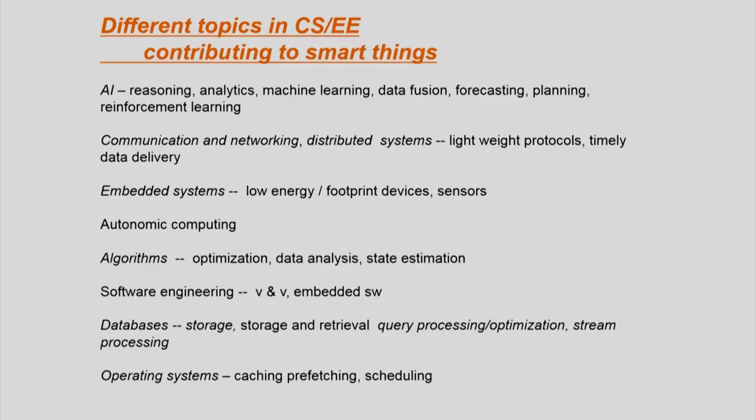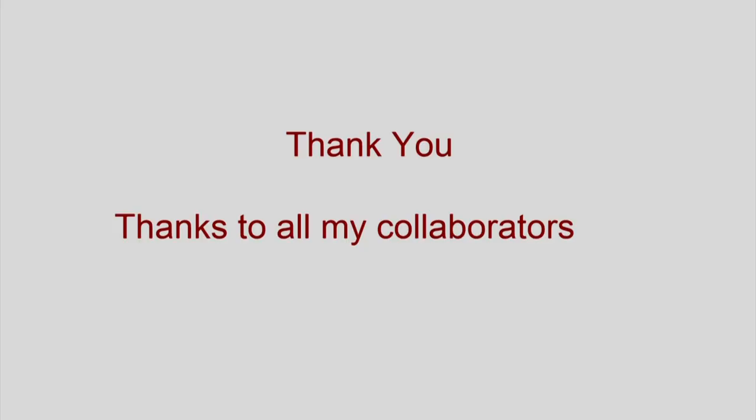Finally, if you think about all the components of being smart, all topics in computer science and electrical engineering come together: databases, operating systems, autonomic computing, embedded systems, AI, and on and on. Any topic in computer science has a role to play in building smart things. With that I will close — thank you very much, and thanks to all my collaborators through whom I have gotten the insight about being smart. Hopefully, you now not only know what smart artifacts are, but also know how to use the attributes of smartness for your own future.